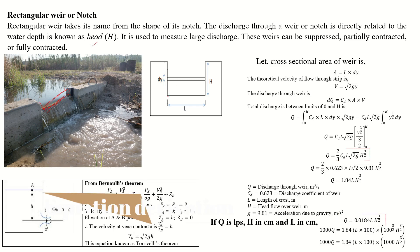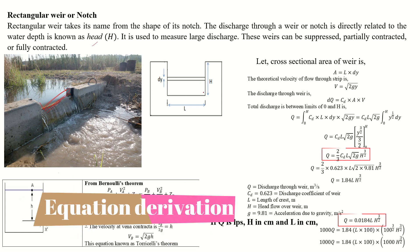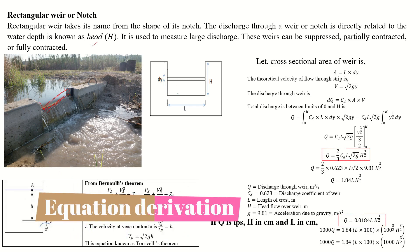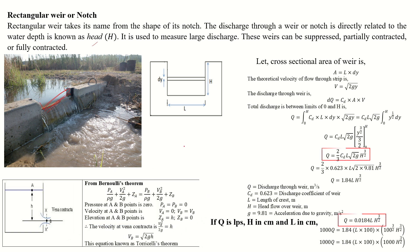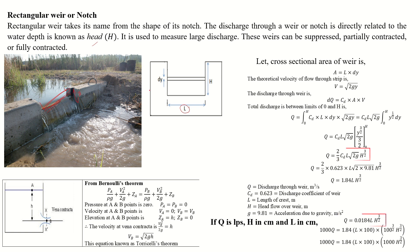This is your rectangular inner shape. This is the crease length. This is your total height H.